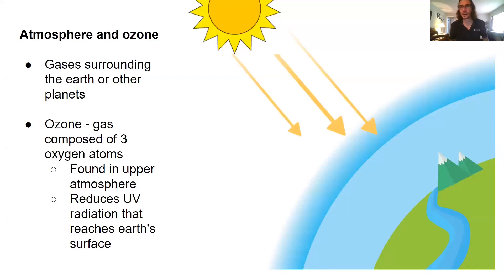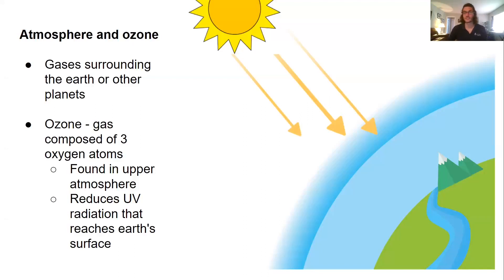Another really big factor that can impact the intensity of sunlight or solar radiation in different forms is the atmosphere and the ozone. The atmosphere is essentially gases or layers of gases that surround the Earth or other planets, and those are going to be really important for controlling the intensity of sun as well. The ozone is found in the upper and lower layers of the atmosphere, and it's a gas composed of three oxygen atoms.